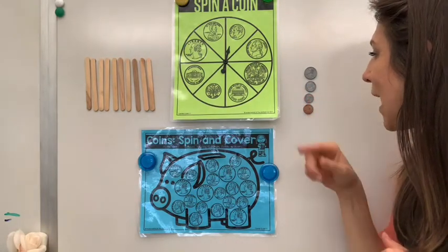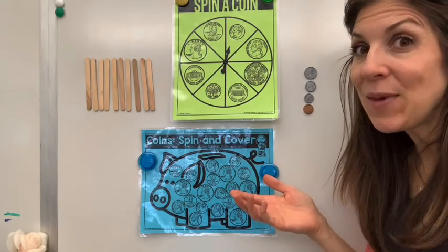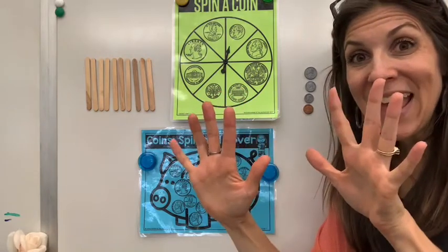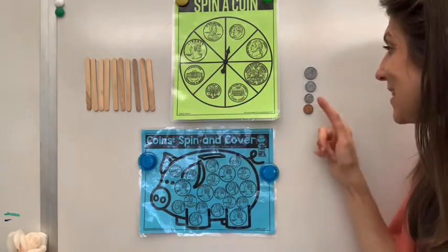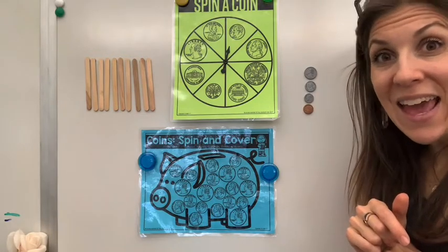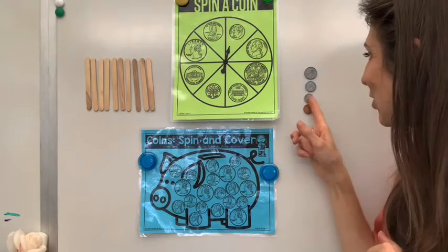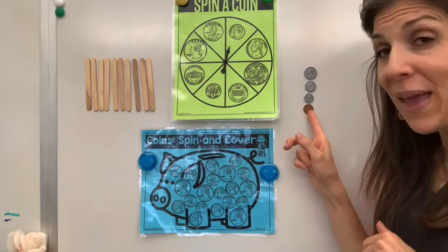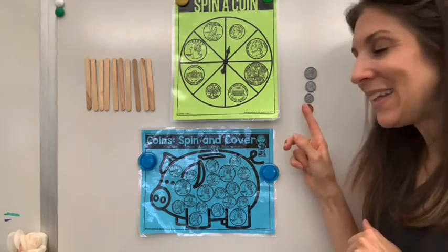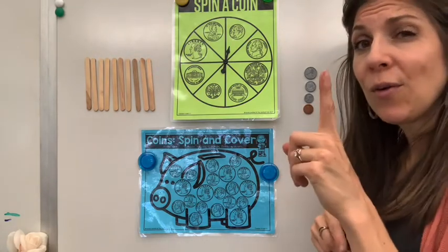And who's on the dime? Well, first — a dime is worth how many cents? 10 cents, very good, 10 cents. And who is on it? Yes, Franklin Roosevelt. Roosevelt, good job. And on the penny, his name is Abraham Lincoln. Very good. And a penny is worth one cent.